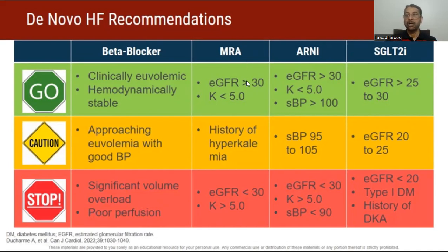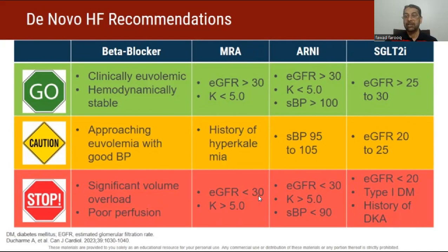Similarly for MRA, check renal function. If GFR is above 30 and potassium is less than 5.0, you can start. But if there is a background of fluctuating renal function and hyperkalemia, be cautious. If GFR is clearly less than 30 and there is hyperkalemia, don't start MRA.